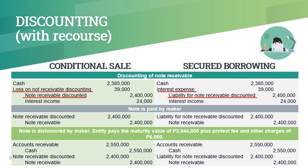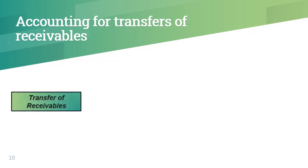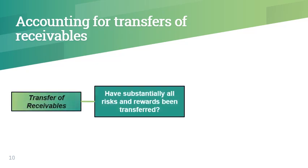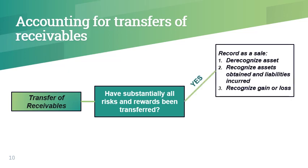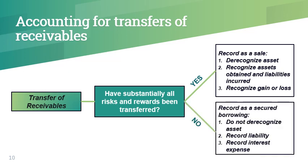Moreover, secured borrowing recognizes interest expense instead of a loss. To properly account for the transfer of receivables, the entity needs to determine whether substantially all risks and rewards have been transferred. If the answer is yes, then the transfer is accounted for as a sale. If the answer is no, then the transfer is accounted for as a secured borrowing.